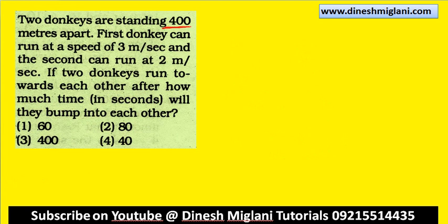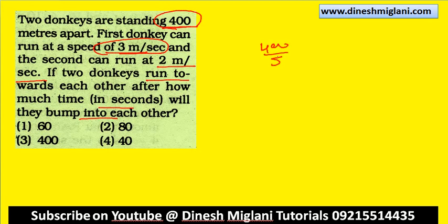Two donkeys are standing 400 meters apart. The first donkey can run at 3 meters per second and the second at 2 meters per second. If the two donkeys run towards each other, after how much time do they bump into each other? That is 400 divided by 5 (relative speed) = 80 seconds. Hence second one is my answer — after 80 seconds they bump into each other.